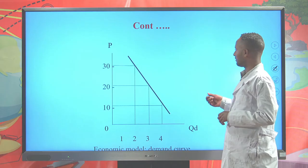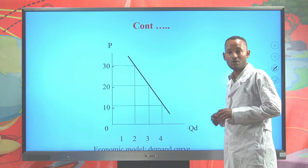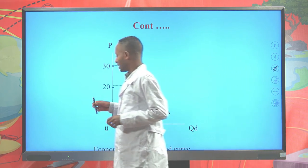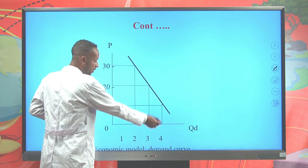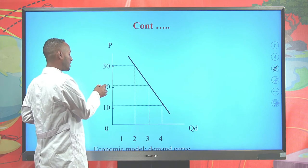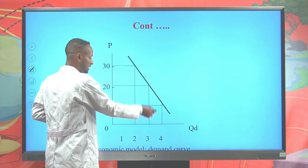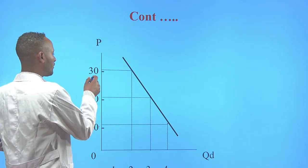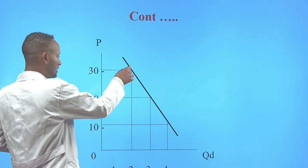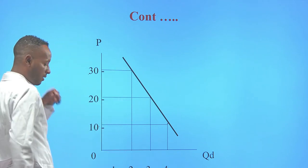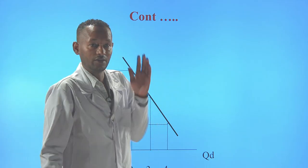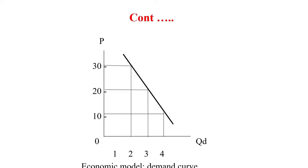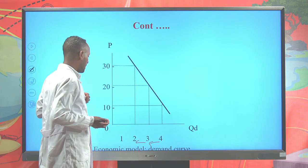This is the demand curve — a graphical representation of the individual demand schedule. When the price of a kilogram of orange is 10, the quantity demanded is 4 kilograms; when the price increased to 20, quantity demanded decreased to 3 kilograms. By joining these points together, we construct the demand curve. This is a model represented in the form of a curve and a typical example of a demand curve.